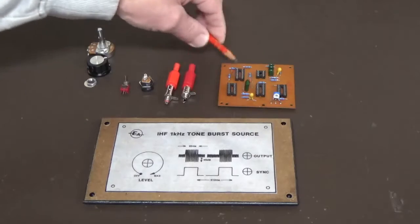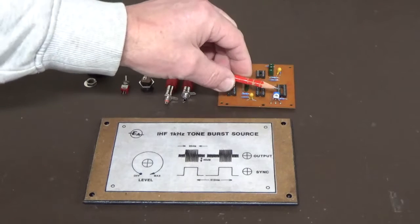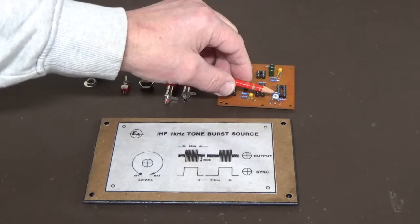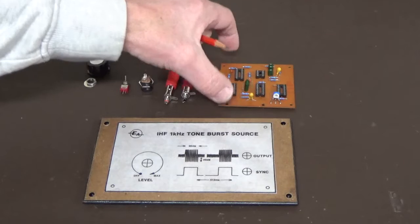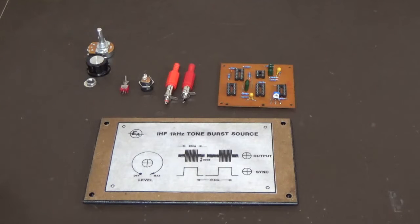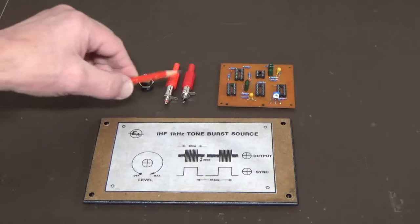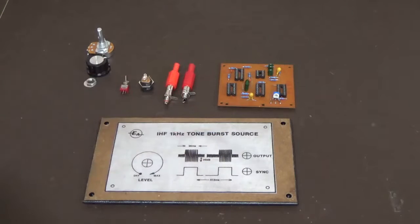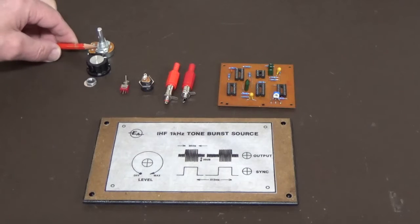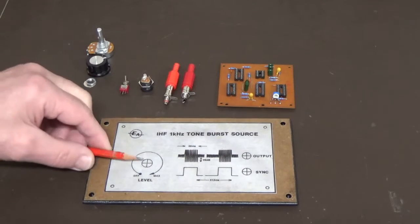We've got the components soldered to the board. We did have an interesting situation with reference to the 100k potentiometer, but I'll show you that in a minute. The next stage is to fit these components onto the front of the panel, so we've got to measure up for the diameters that we've got to drill.